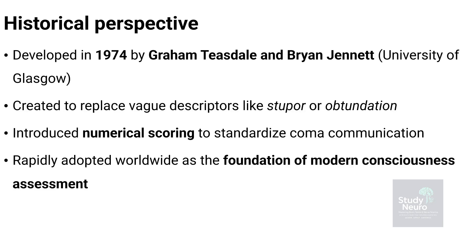The Glasgow Coma Scale was developed in 1974 by Graham Teasdale and Brian Jennet at the University of Glasgow. Their goal was to replace the vague and inconsistent terms used to describe coma — words like stupor or obtundation — with a clear, structured framework. By introducing numerical scoring, they created a standardized way to communicate a patient's level of consciousness across teams and settings. The scale was rapidly adopted around the world and soon became the foundation of modern consciousness assessment.